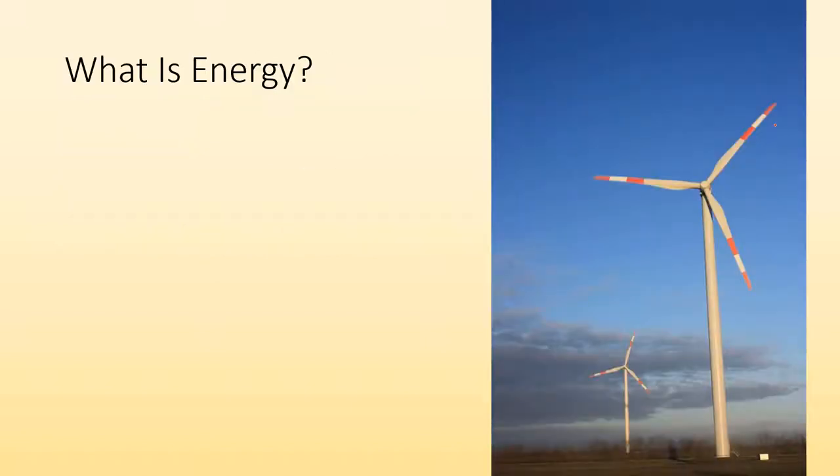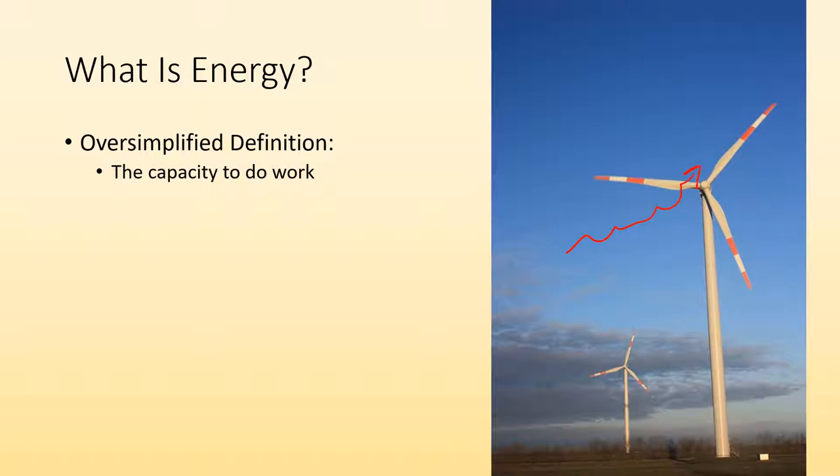So first question, what is energy? Well, an oversimplification is simply the capacity to do work. So the wind has energy. As the wind's blowing, it's blowing past this wind turbine, and it can cause the turbine to spin, doing work. So that wind has energy because it has potential to do work.